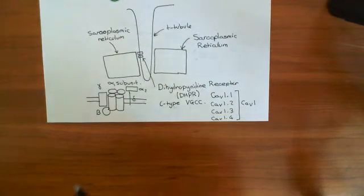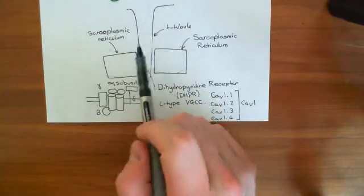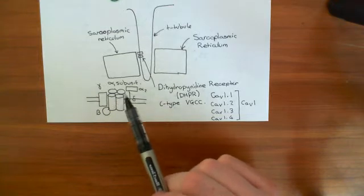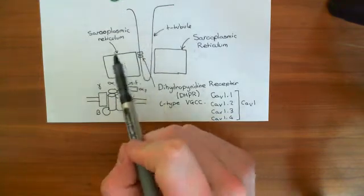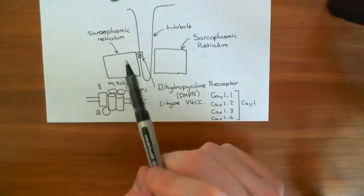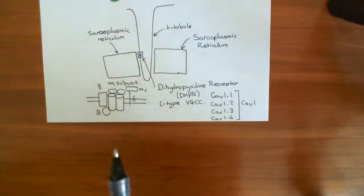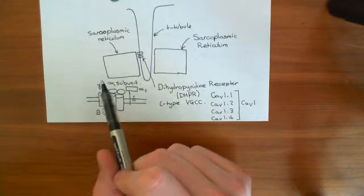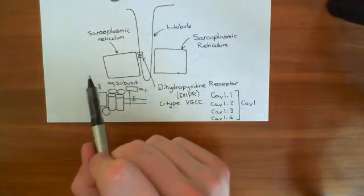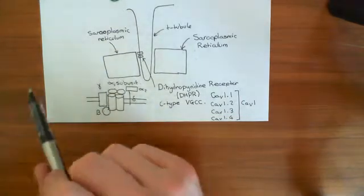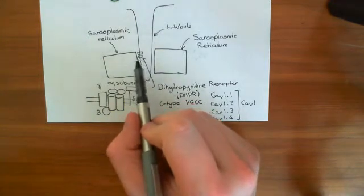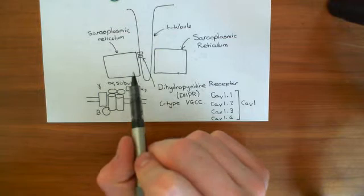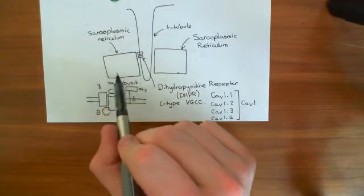When the voltage across this membrane depolarizes, as it will during an action potential, these voltage-gated calcium channels will open. Calcium is much higher outside the cell than inside, so calcium will move in through this receptor. However, it is not the calcium coming in that is important — repeat, it is not the calcium coming in that causes contraction. These dihydropyridine receptors let in a bit of calcium, but that calcium is not what causes contraction. The main rise in calcium that triggers skeletal muscle contraction is an internal release of calcium from the sarcoplasmic reticulum.